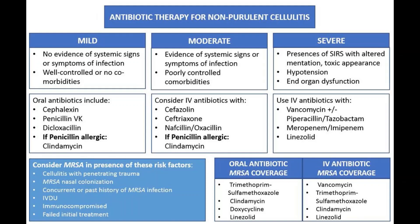Cellulitis treatment usually includes a prescription oral antibiotic. Within three days of starting an antibiotic, let your doctor know whether the infection is responding to treatment. You will need to take the antibiotic for as long as your doctor directs — usually five to ten days, but possibly as long as 14 days. Regarding the choice of antibiotics, you can see the names of medication written on the image in the video.